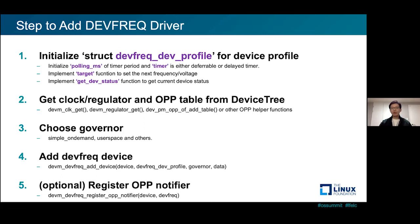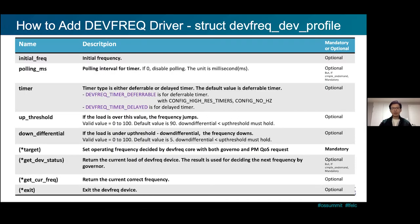If you want to control the frequency via the OPP interface, you need to add and register OPP nodes with the device frequency helper function. The device profile structure allows initializing five variables when implementing the driver, along with four functions — target and get device status are mandatory. The polling millisecond timer affects the timer monitoring for the simple on-demand governor. The up threshold and down differential affect the frequency scaling speed in the governor. These variables are tuning points for governor behavior.